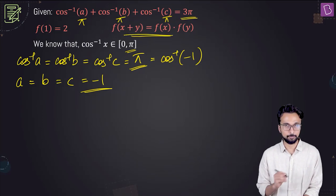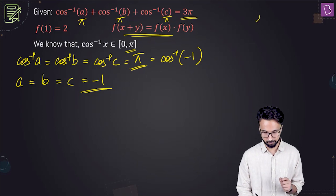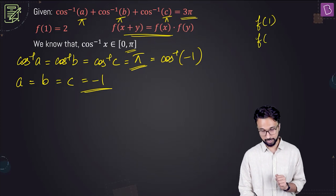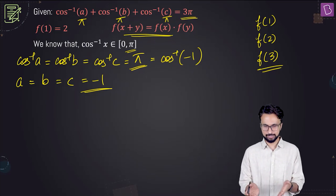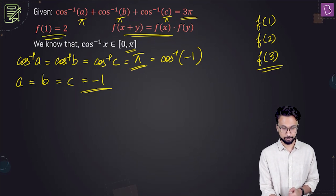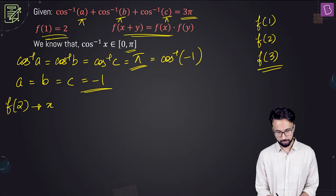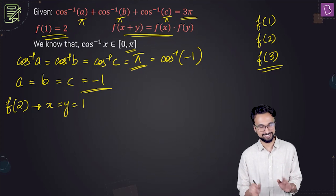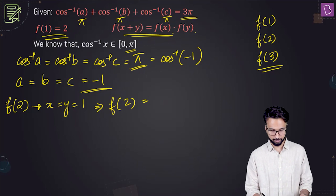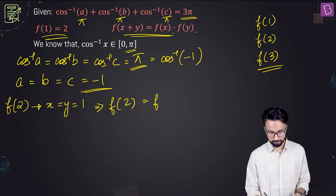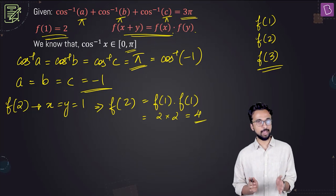Now applying the functional property to find f(2) and f(3): for f(2), put x equals y equals 1, giving f(2) equals f(1) times f(1) equals 2 times 2 equals 4. For f(3), put x equals 2 and y equals 1, giving f(3) equals f(2) times f(1) equals 4 times 2 equals 8. So f(1) equals 2, f(2) equals 4, f(3) equals 8.